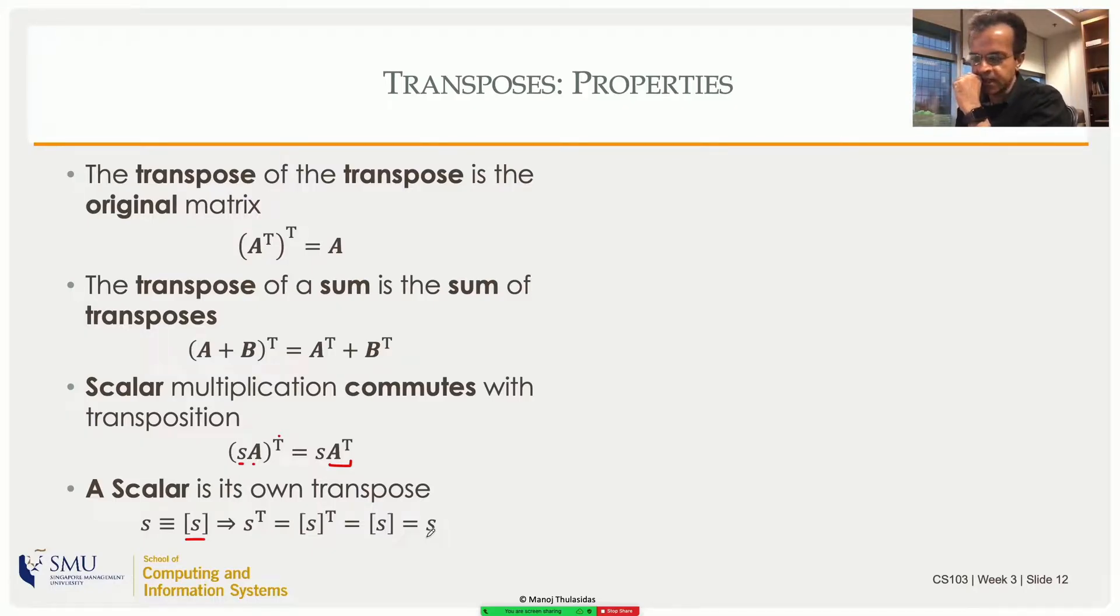Now there is an important rule, product rule of transpose, which says (AB)^T, the transpose of a product is B^T A^T. It is the transpose of the matrices multiplied but in the opposite order, the reverse order. That is critical and this is used in many many places. It's a basic property.